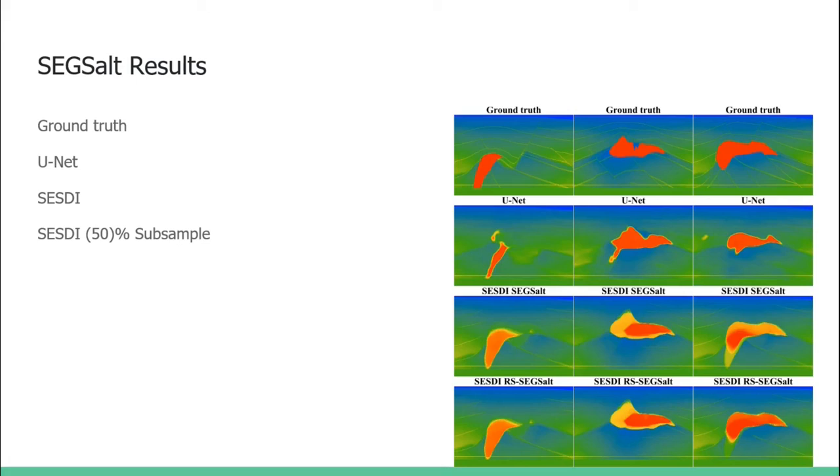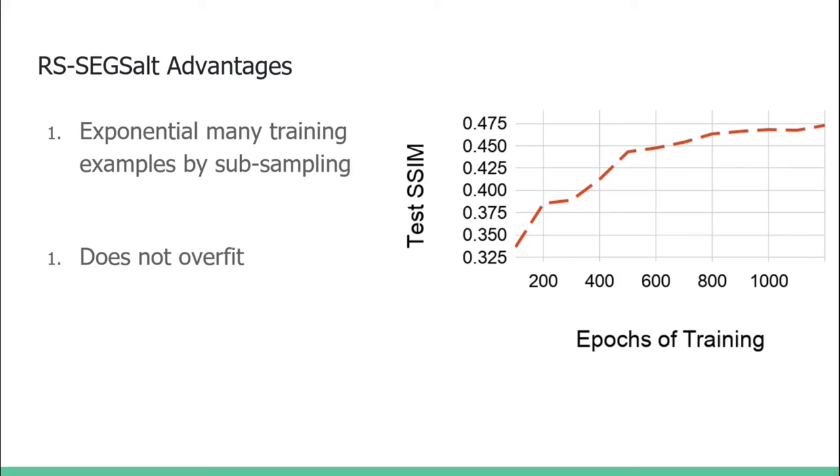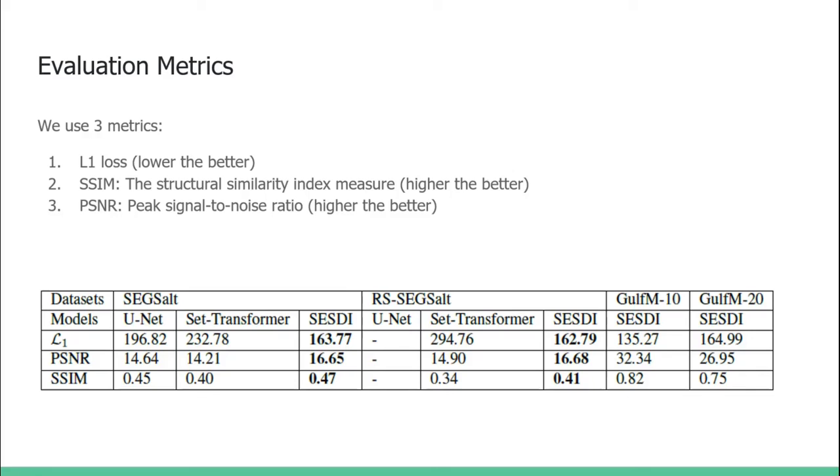Another interesting observation we find is that by subsampling, we can generate exponentially many training examples, as we are selecting subsets from traces power set. Moreover, it could prevent overfitting as SSIM is kept increasing. We also present evaluation by standard metrics.